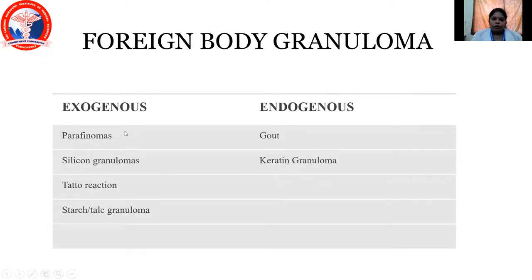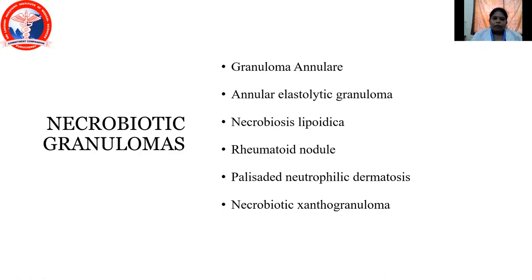Coming to foreign body type of granulomas, we have exogenous and endogenous. Exogenous examples include silicone granuloma and tattoo reaction, and endogenous examples are gout and keratin granulomas. Coming to necrobiotic granulomas, the lesions under this category include granuloma annulare, elastolytic granulomas, necrobiosis lipodica, rheumatoid nodule, palisaded neutrophilic dermatosis, and necrobiotic xanthogranuloma.